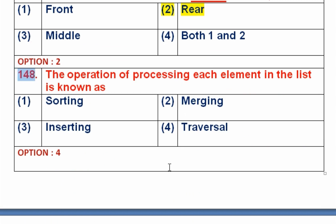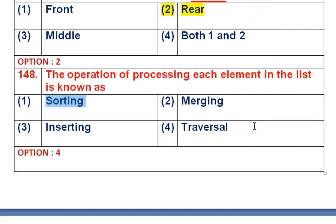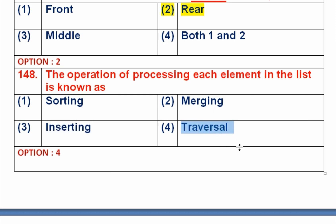Question number 148: The operation of processing each element in a list is known as — option 1 is sorting, option 2 is merging, option 3 is inserting, option 4 is traversing. Sorting arranges elements in ascending or descending order. Merging joins two different sets into one. Inserting adds a new element into a list. Traversing is the process of visiting each element of the list. So option 4, traversing, is the right answer.